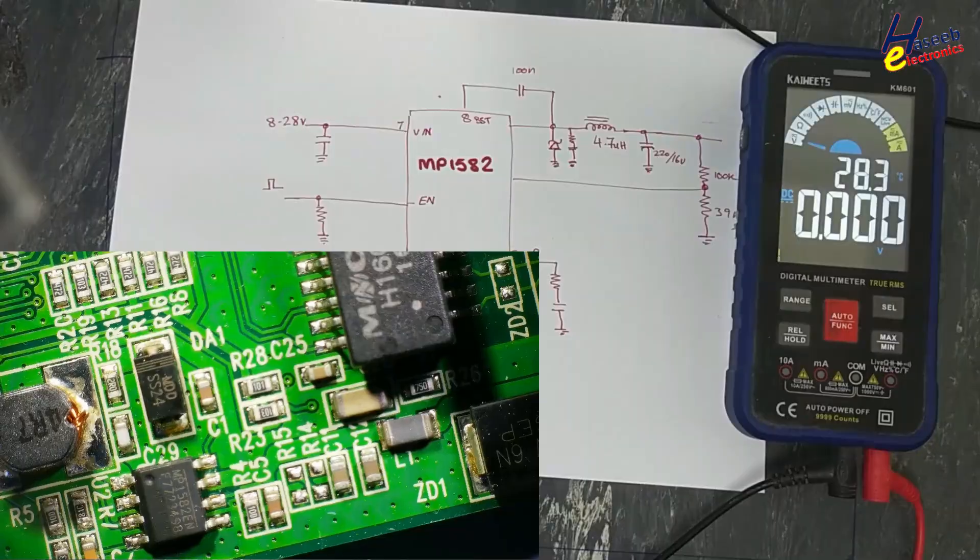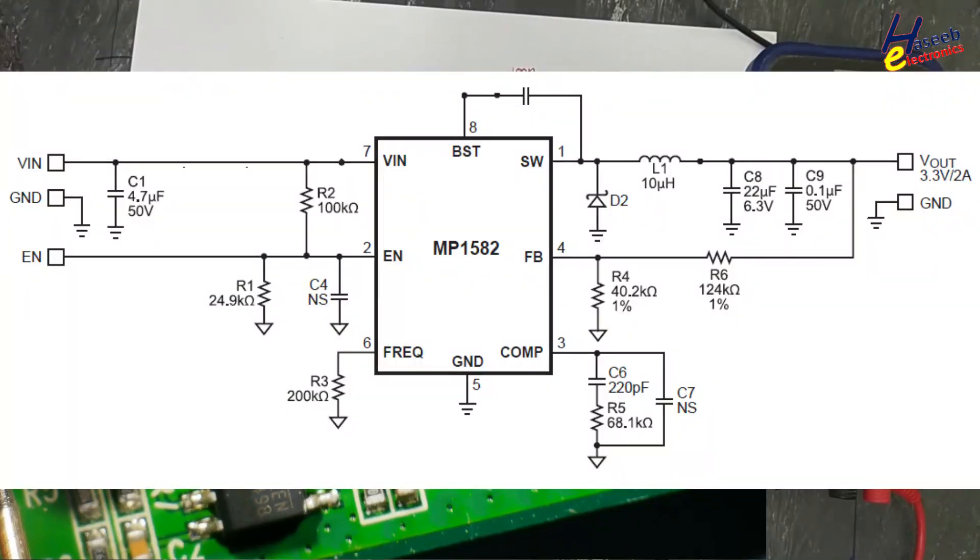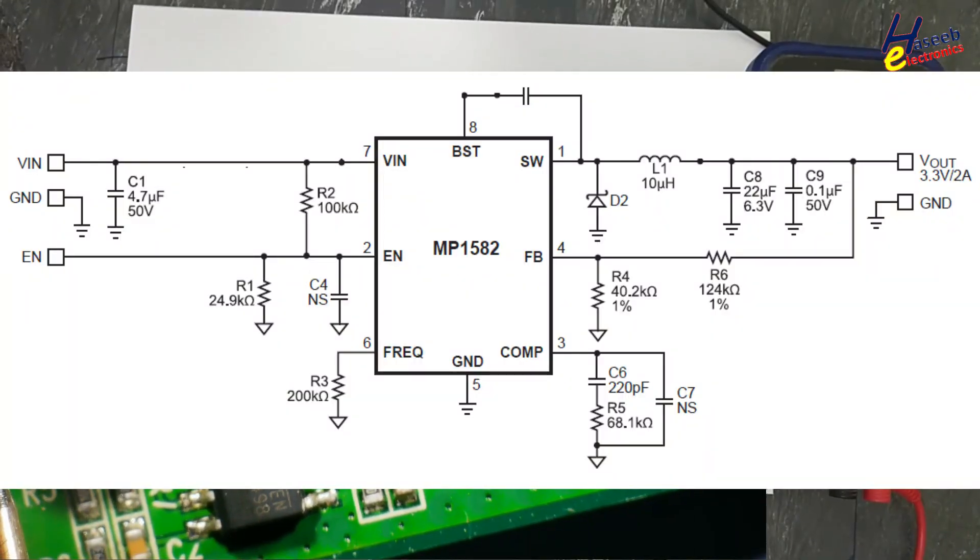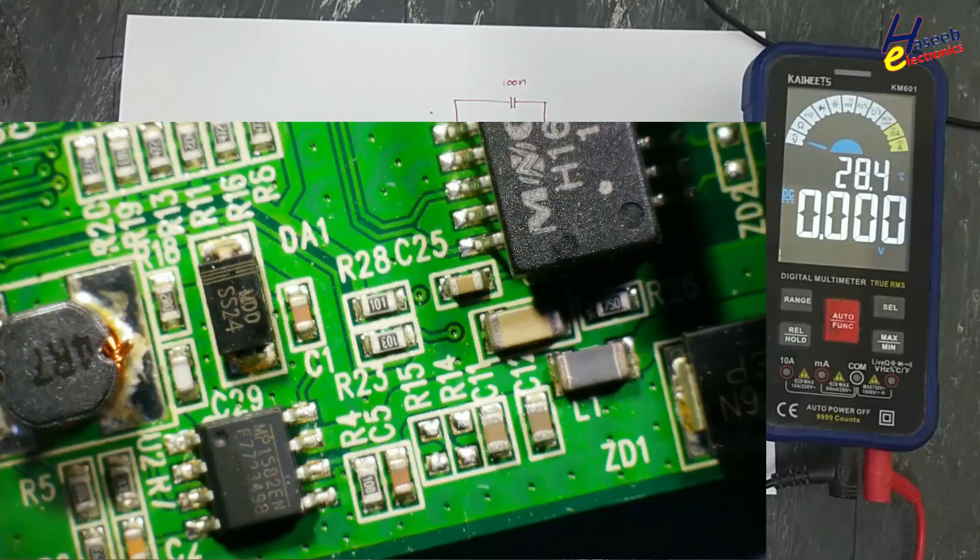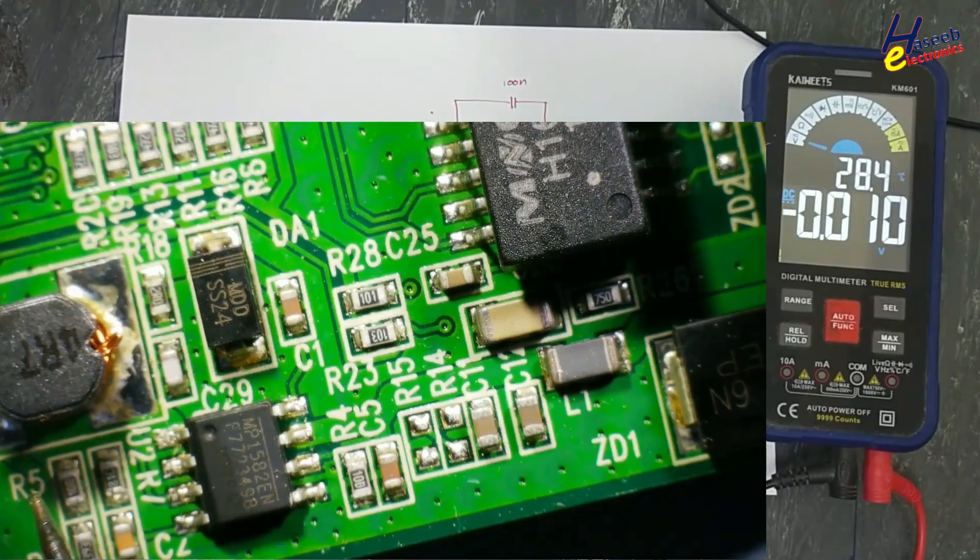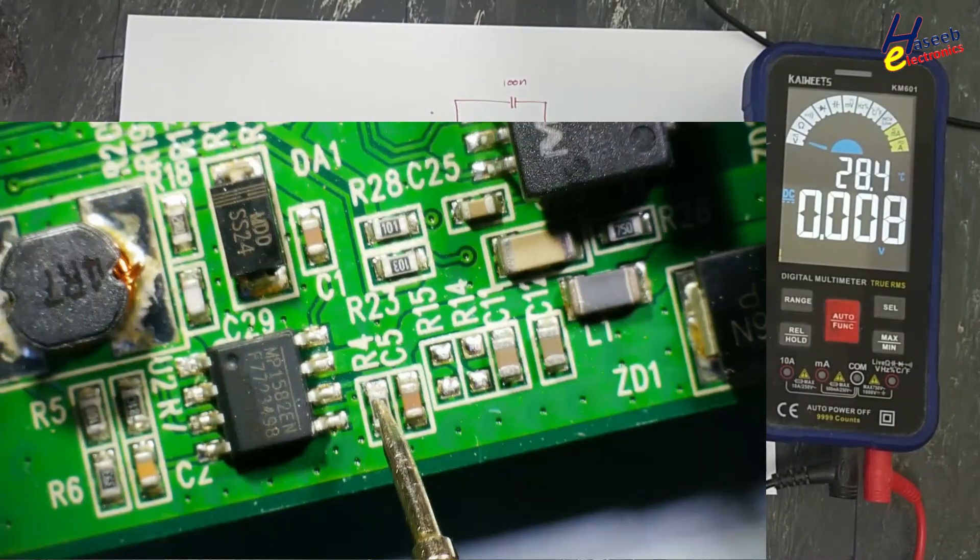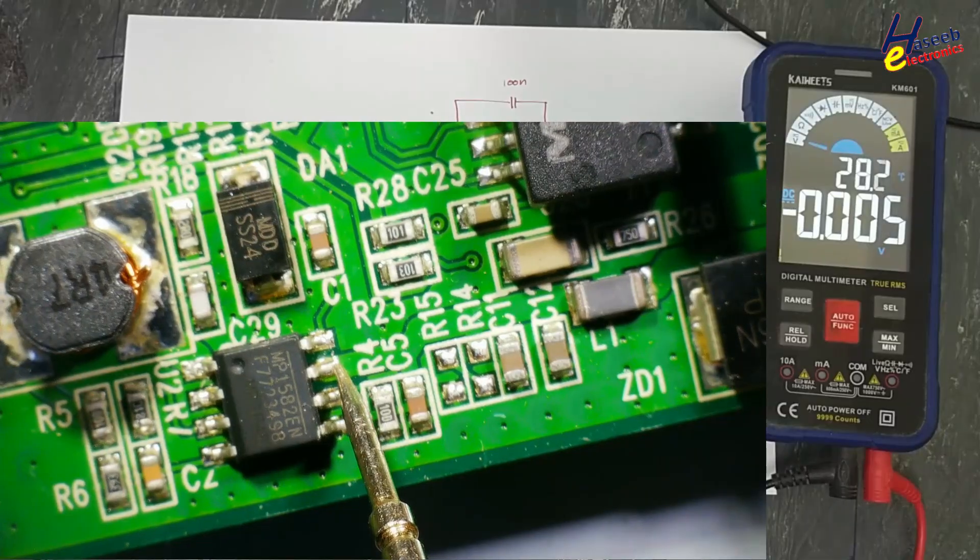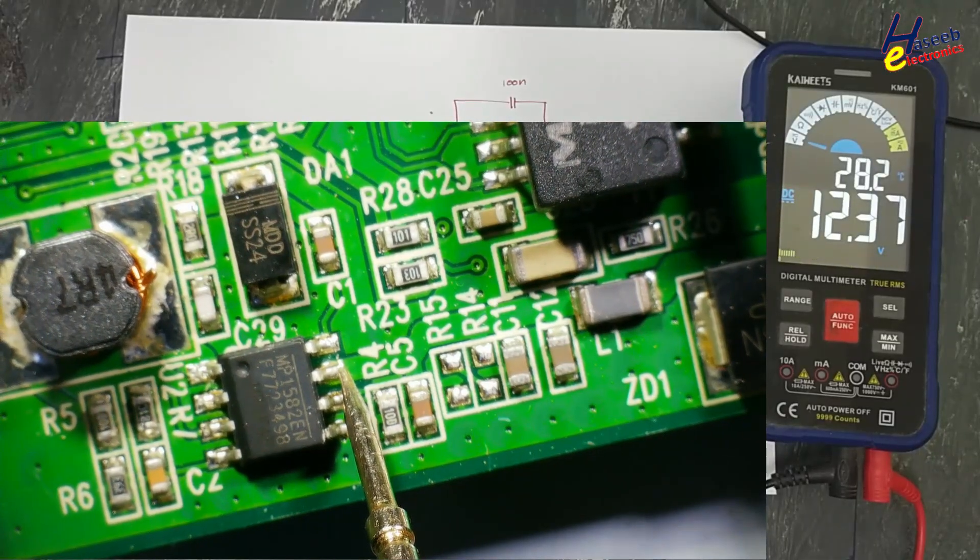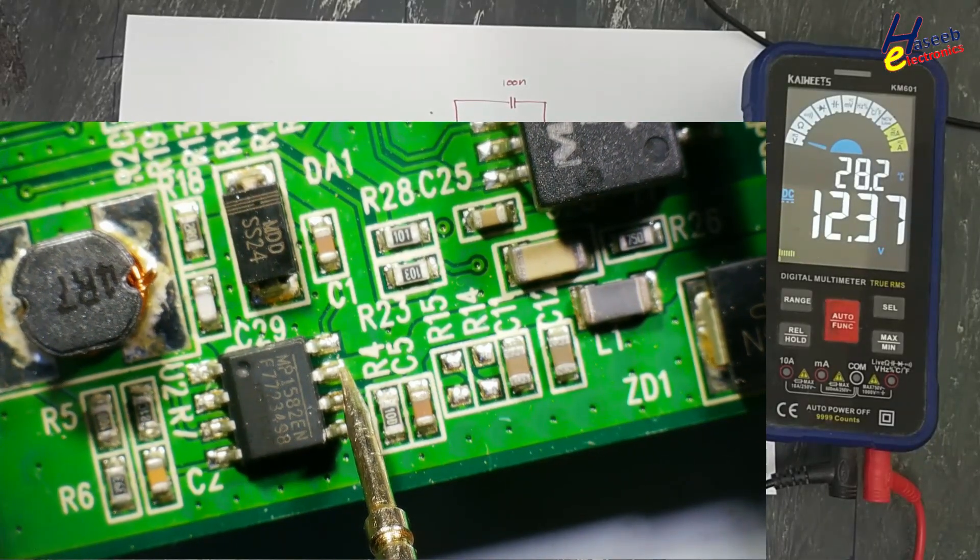You can find this sample circuit in the datasheet of MP1582 IC. Pin number seven, that is input voltage, 8 volts to 28 volts can be applied to this IC.